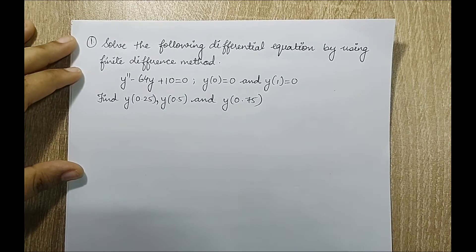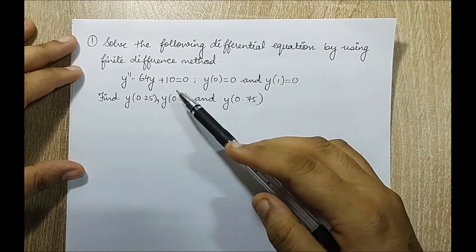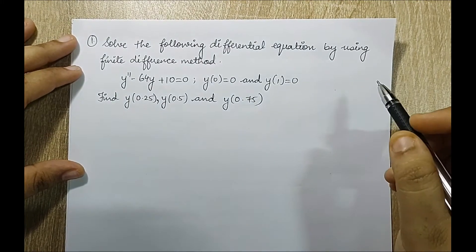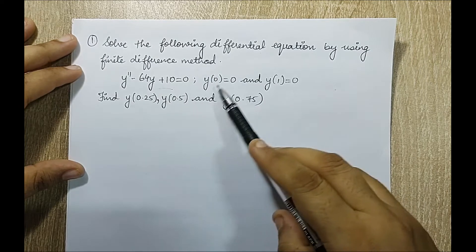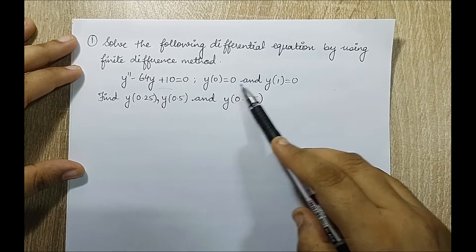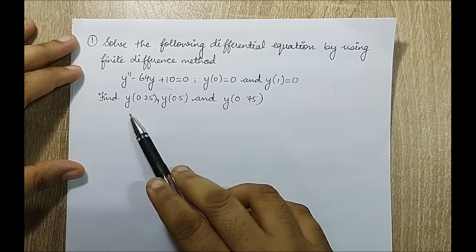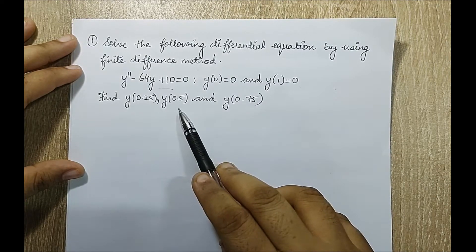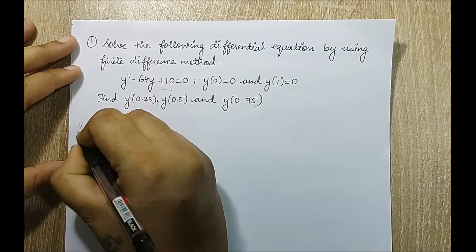Hello everyone, welcome to the next session of finite element analysis. In this session I am going to start with solving numericals on finite difference method. The first question: solve the following differential equation by using finite difference method. The equation is given, y at 0 is 0 and y at 1 is 0. Find y at 0.25, y at 0.5, and y at 0.75.